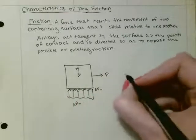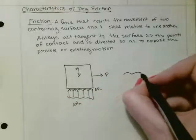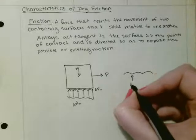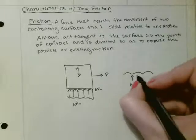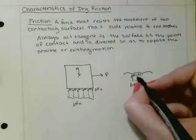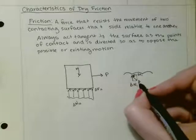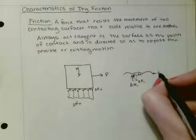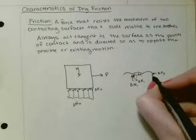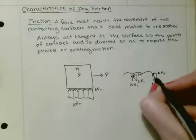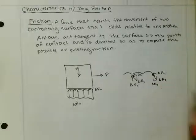If we were to look at this really closely, the surface is not going to be perfectly even. At each of these points of contact we would have delta N1 and delta F1, and the resultant would give us delta R1. That would be at every single surface — over here we'd have delta F3, delta N3, and the resultant delta R3.